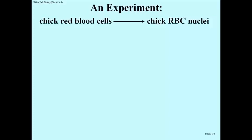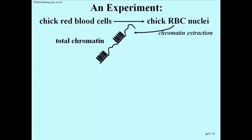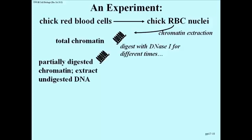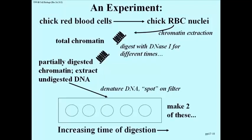If you take chick red blood cells from young chickens and isolate their nuclei and do a chromatin extract that yields total chromatin in a test tube — cartooned to suggest some of it is heterochromatin, some of it is euchromatin — and you digest this preparation with DNase for different amounts of time, the expectation is that the euchromatin will be digested preferentially and the heterochromatin will remain behind.